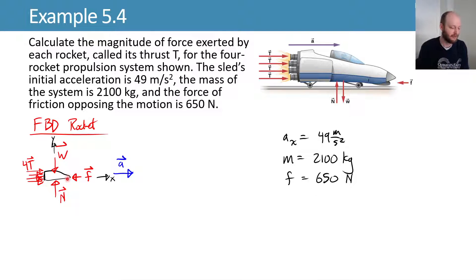So here's our free body diagram. What we have is our normal force acting up. That's our normal force from the track that's keeping us from falling through the track. We have the weight of the rocket sled acting downward, and those hopefully balance each other, and we don't have to worry about them.